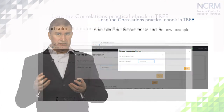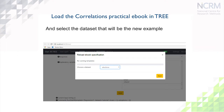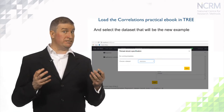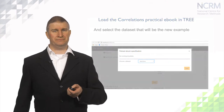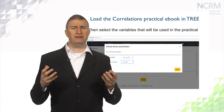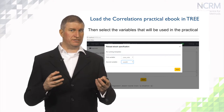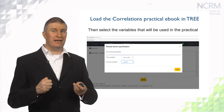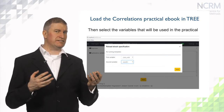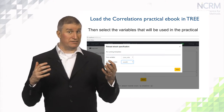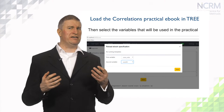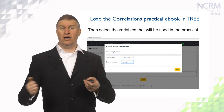To start, I load up the tree interface in Stature — one of Stature's three interfaces — and load the correlations practical ebook. It asks me firstly to choose a data set, and as shown here I choose the elections data set. I then choose from the pull-down list the two variables of interest: the conservative vote share and the proportion of the constituency that are over 65. So I'm constructing a practical asking: what is the correlation between conservative vote share and older constituents?